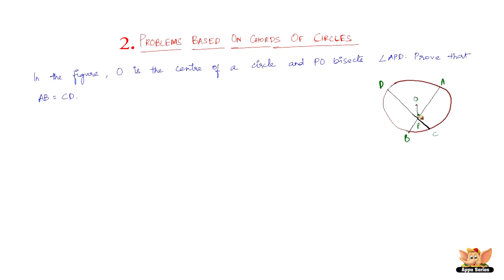To prove that they are equidistant from the center, let us draw OE perpendicular to AB and OF perpendicular to CD. If we can prove that OF equals OE, then CD equals AB automatically. So we just need to prove triangle OFP is congruent to triangle OEP.